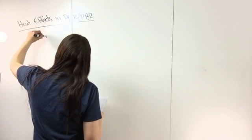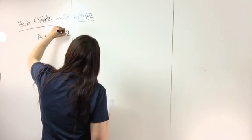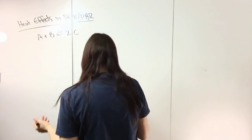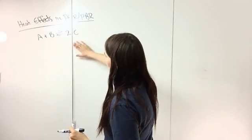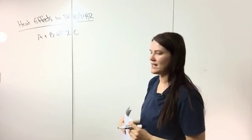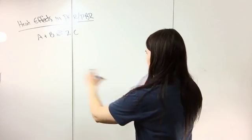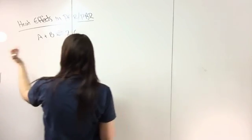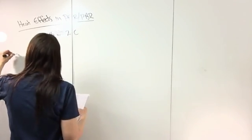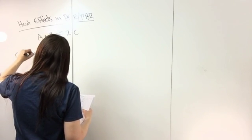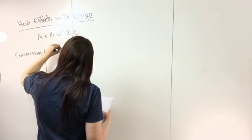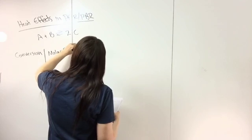Let's assume you have the following reaction: A + B → 2C, and it's reversible. I want to show how you do this for both conversion and molar flow rate, so I'll set up two columns side by side to compare the difference. The first column is conversion, and the second is molar flow rate.